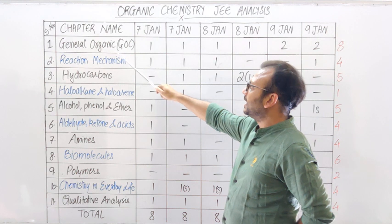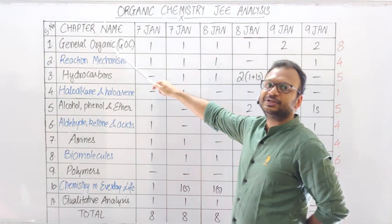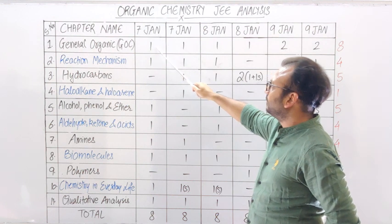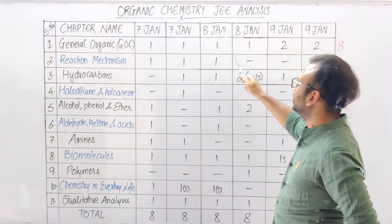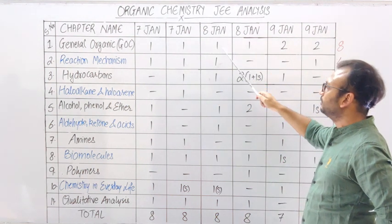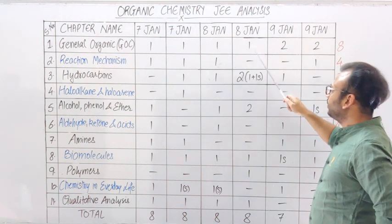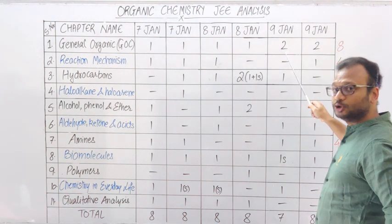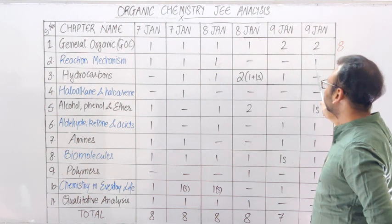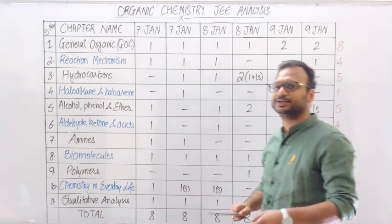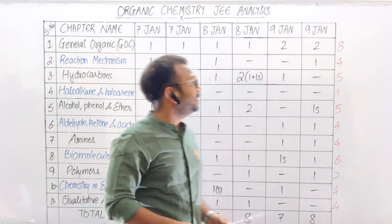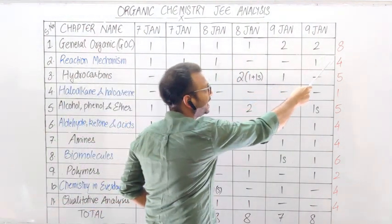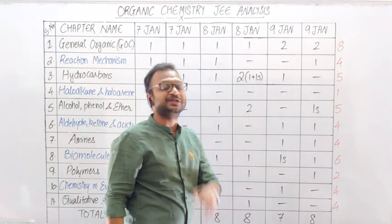The first chapter is General Organic Chemistry, which we call GOC. In 7th January Morning Shift there was 1 question, Evening Shift 1 question, January 8th Morning Shift 1 question, Evening Shift 2 questions, and 9th January Evening Shift 2 questions. Total, from 6 papers, GOC had 8 questions.